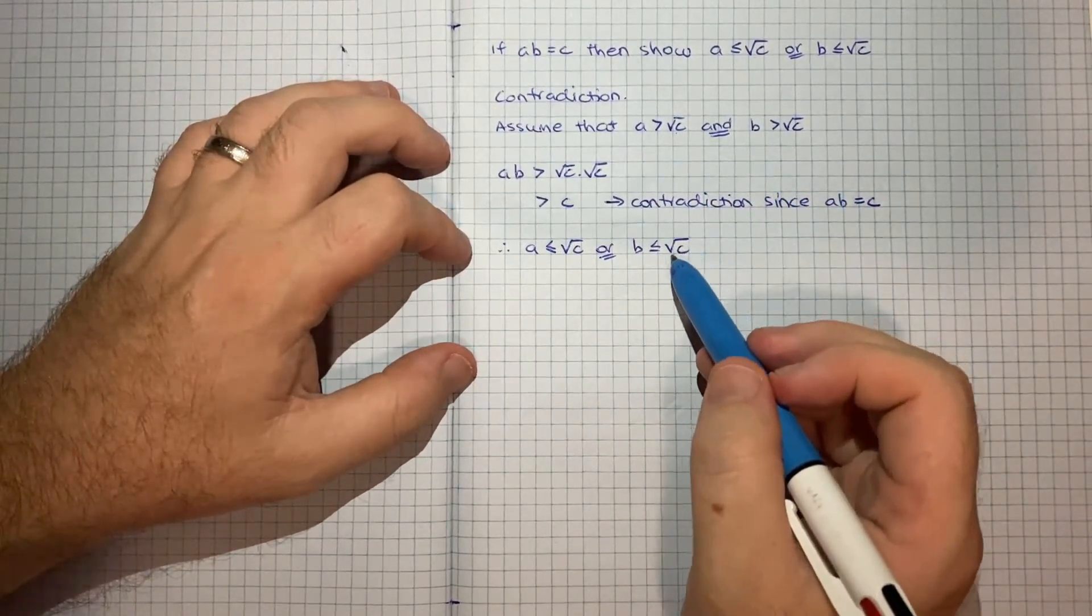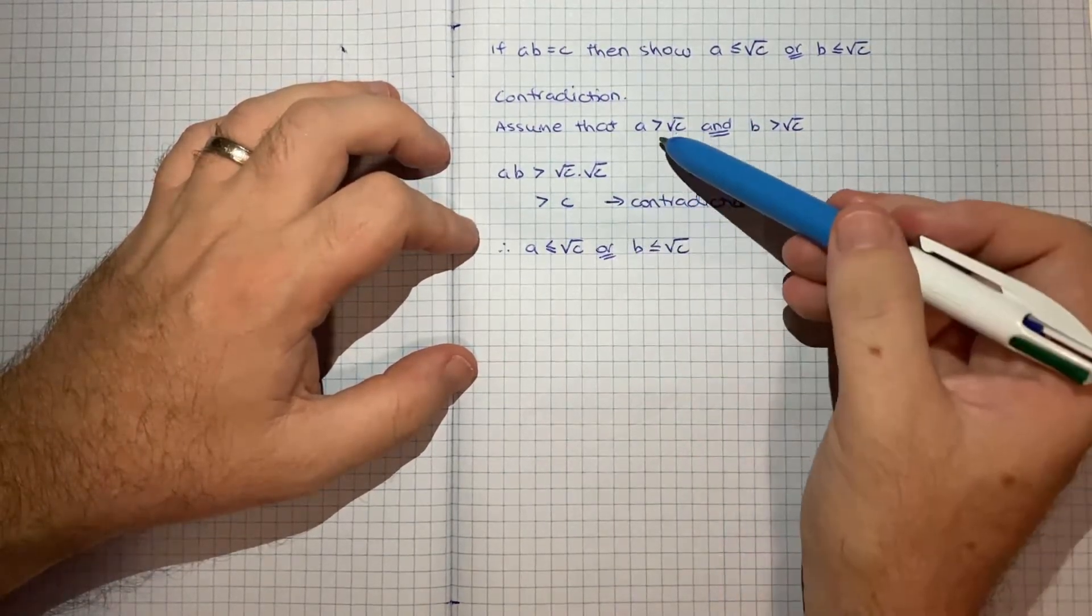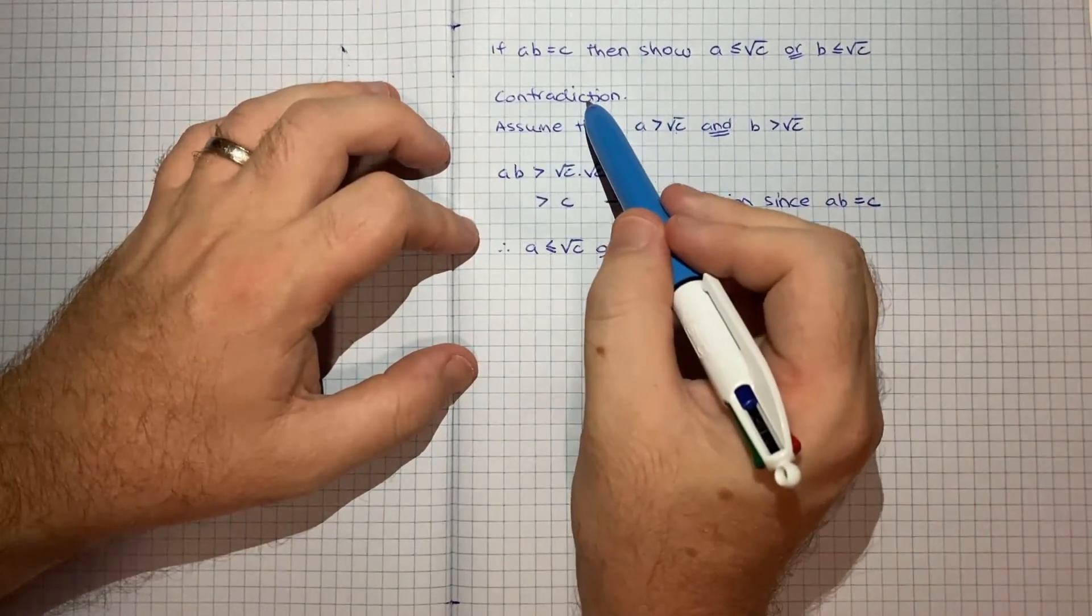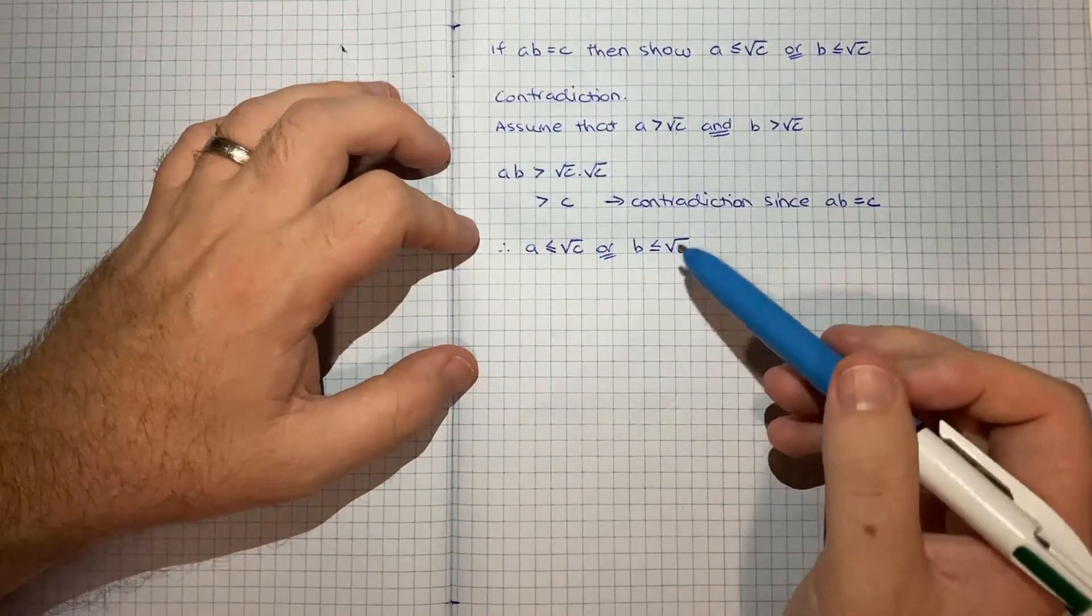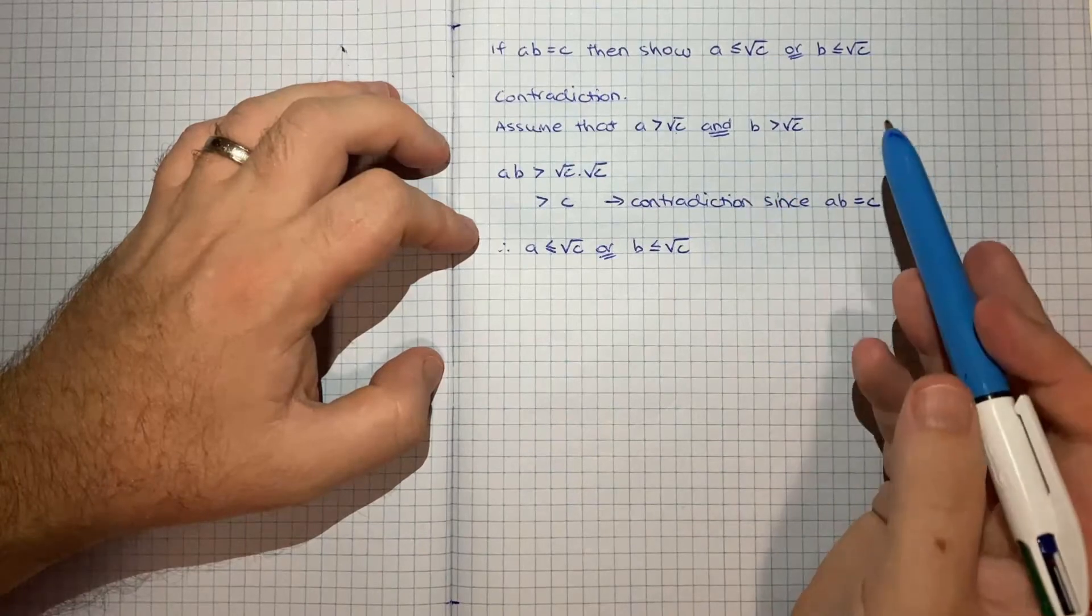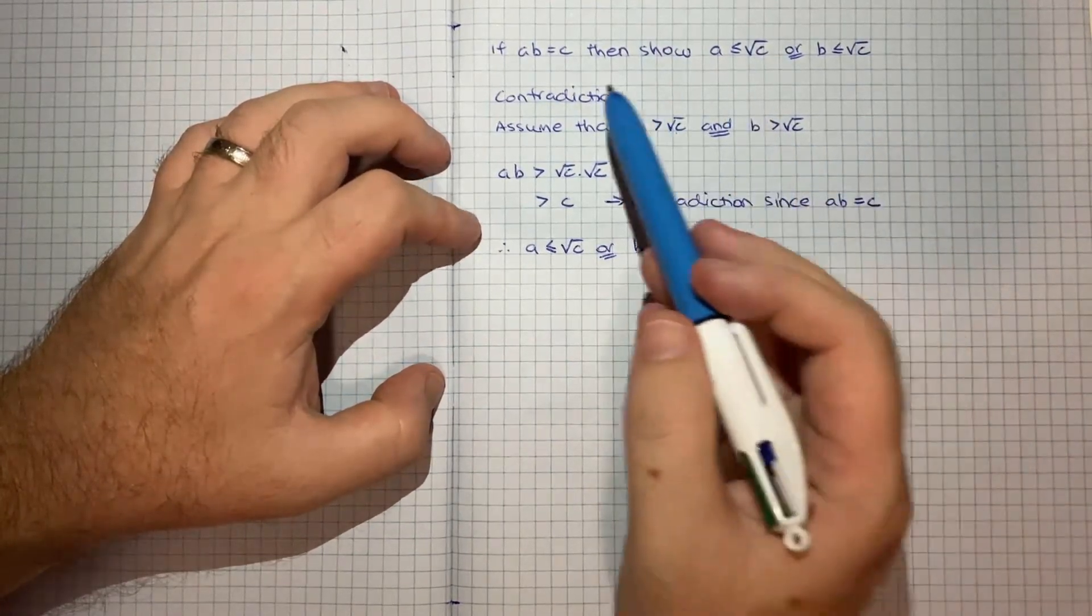And so that's the proof. So it actually turned out to be quite a short proof. Once you knew that contradiction was going to be the technique, it really just fell out quite quickly. So I actually spent a lot more time going down the AMGM inequality and triangular inequality paths before getting to this.